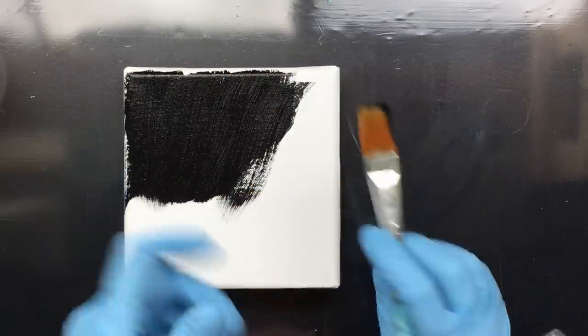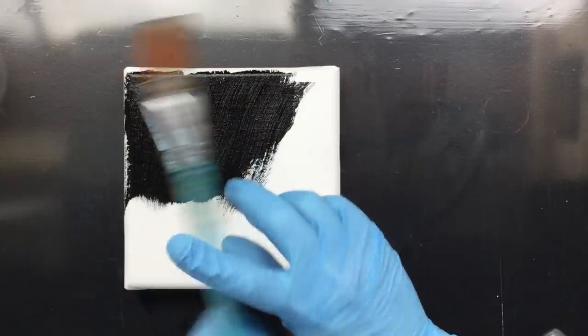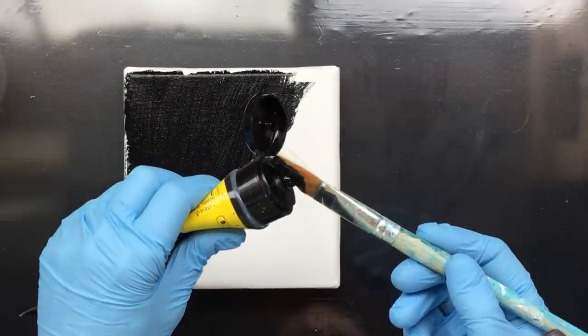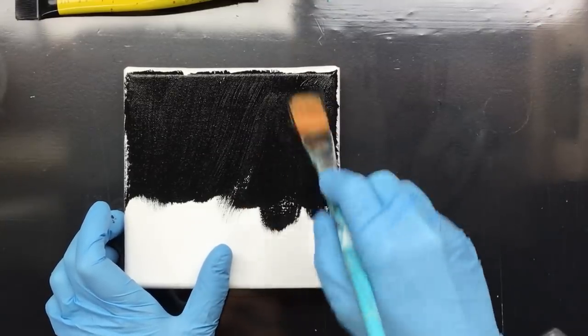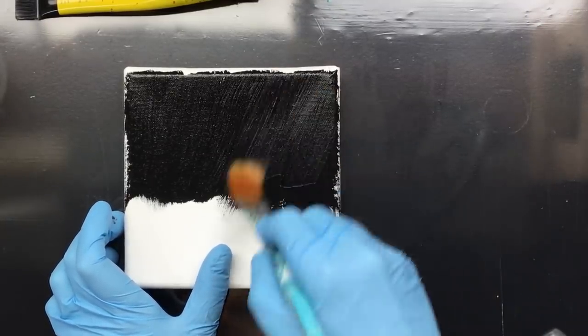And I covered it with sort of a cling wrap thing. And what I do is with a little mist bottle, I mist the top of the paint and then put the cling wrap on it. And then you can keep it for a week, no problem whatsoever.